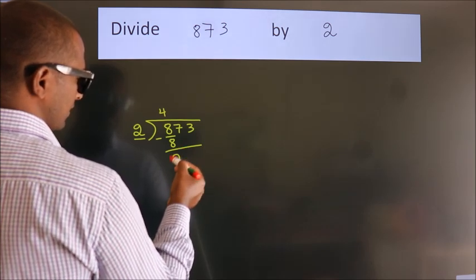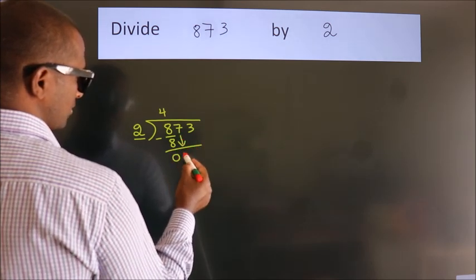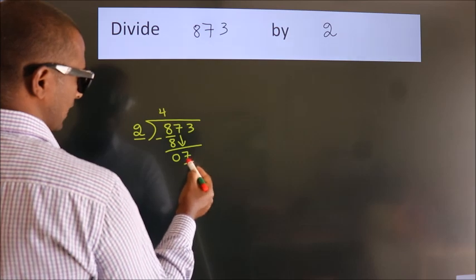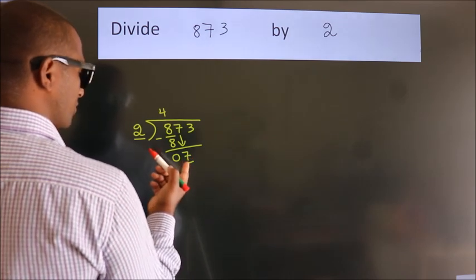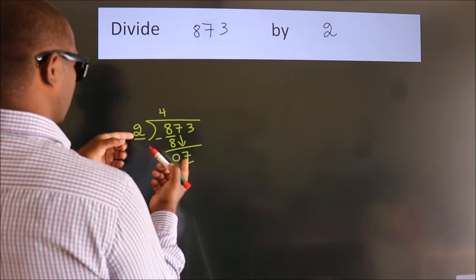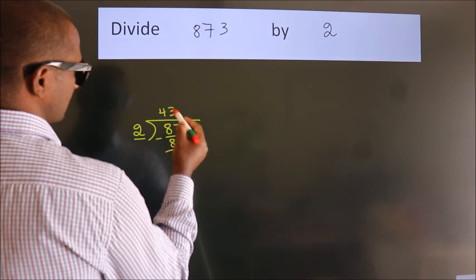After this, bring down the beside number. So 7 down, so 7. A number close to 7 in 2 table is 2, 3, 6.